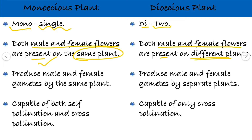In case of monoecious plant, they produce male and female gametes from the same plant. If there are male and female flowers present in one plant, they will produce male and female gametes, produced by the same plant — from a single individual.